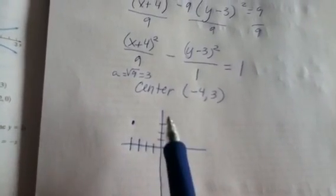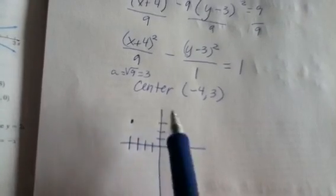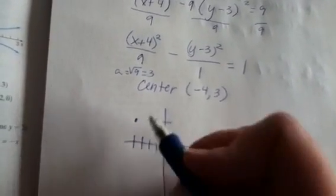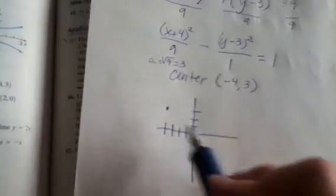...I mean y equals 3, correct? Since it's been moved up 3. But it still is going horizontally just like the x-axis.